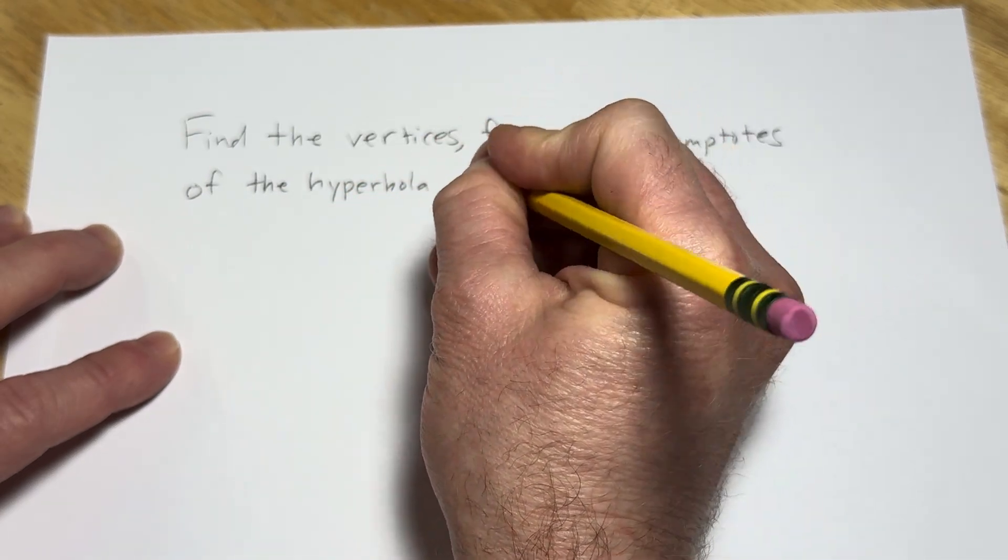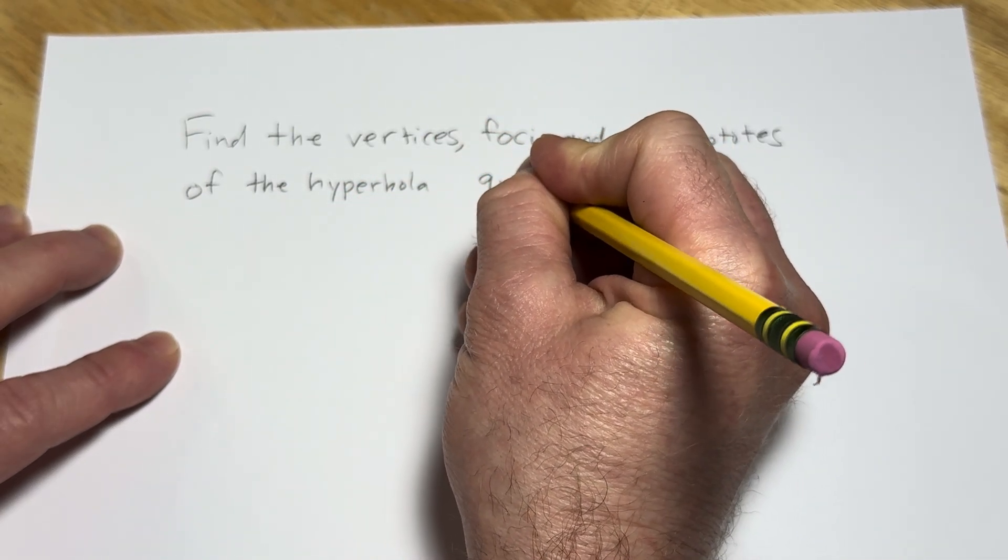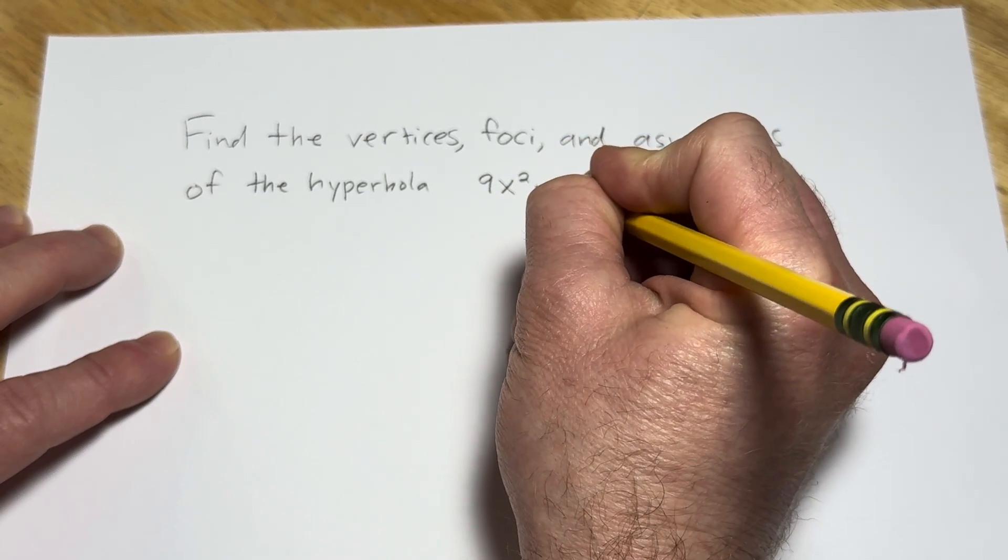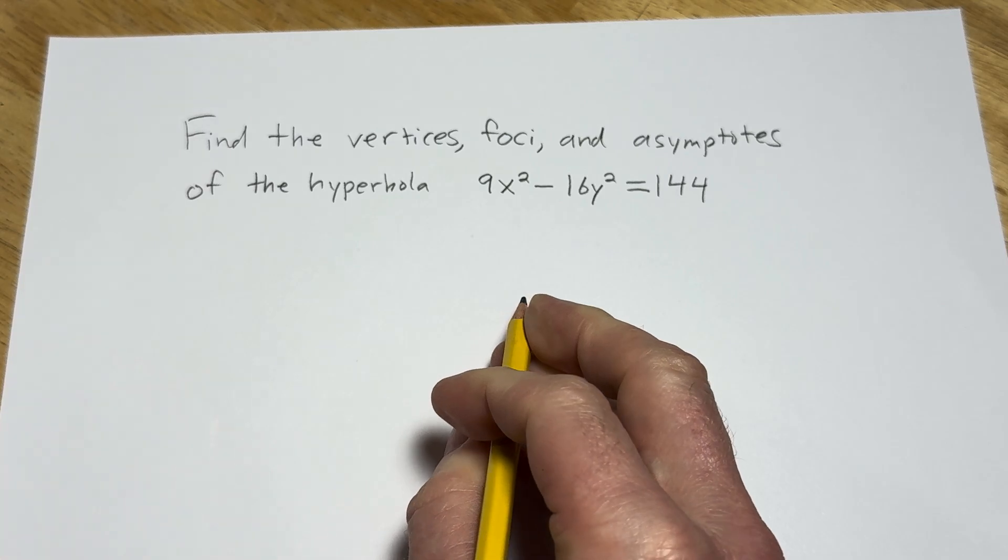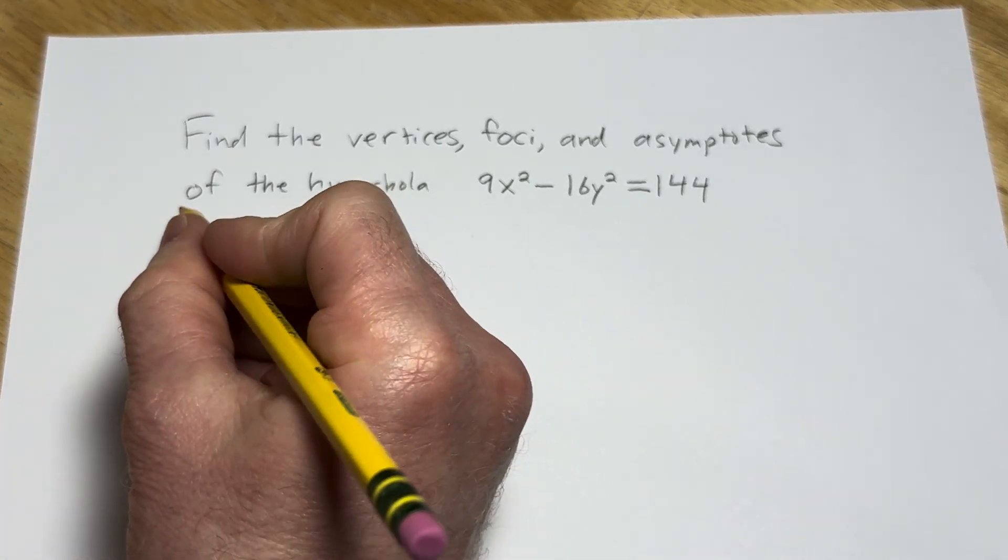So the question is going to be, find the vertices, foci, which is the plural of focus, and asymptotes of the hyperbola. And the hyperbola in this example is 9x squared minus 16y squared equals 144.